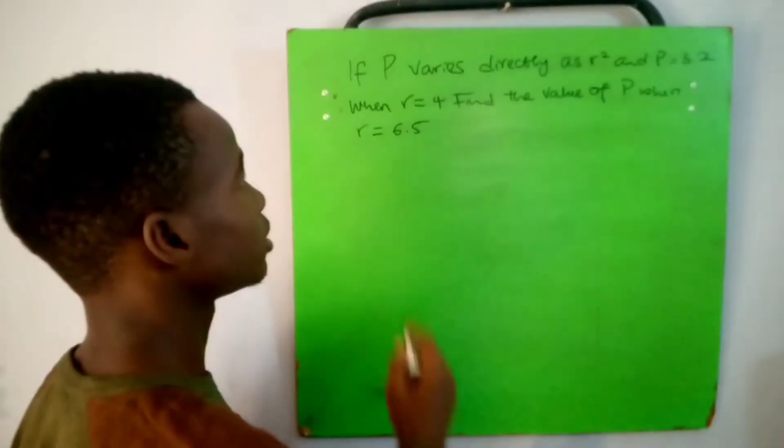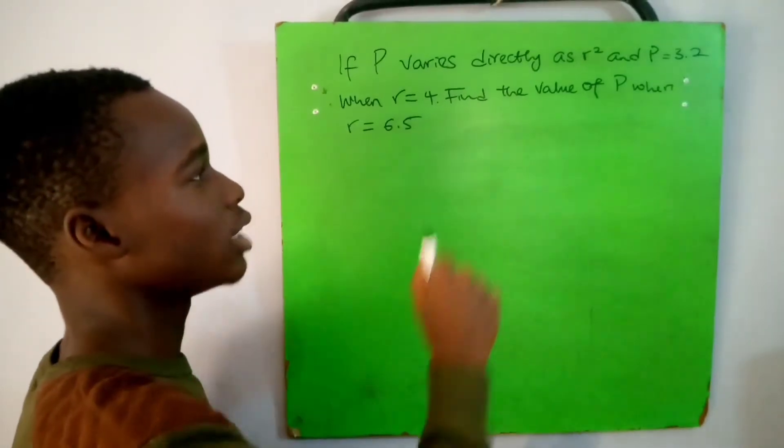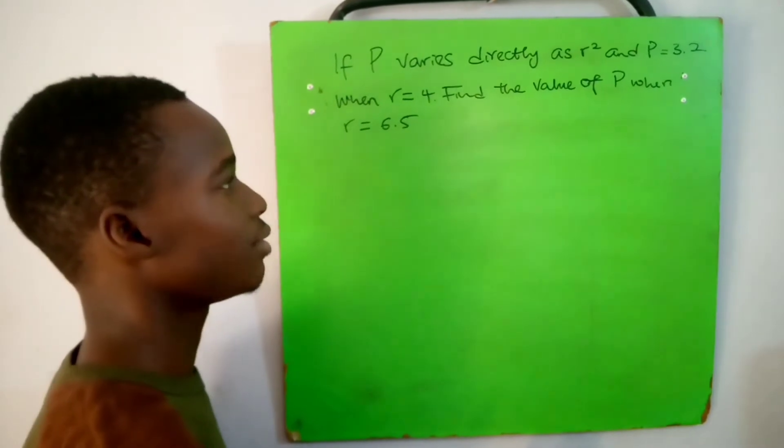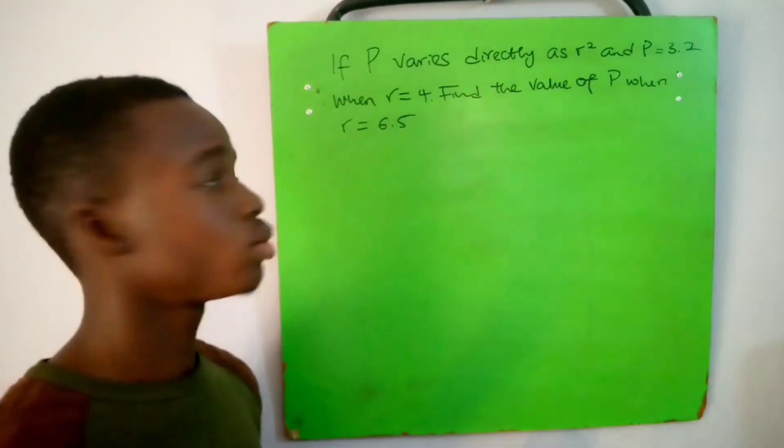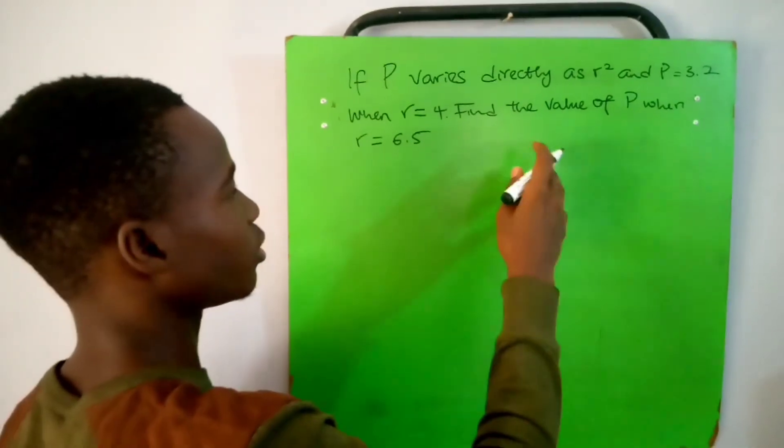Hello, today we'll be solving a question: if P varies directly as r squared and P equals 3.2 when r equals 4, find the value of P when r equals 6.5. So this is English language, so we'll convert it to math language.